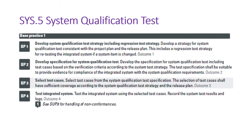BP1 talks about developing the system qualification test strategy, including the regression test strategy. Strategy is about how you are going to test and assemble it. We develop the strategy consistent with the project plan and release plan, because we may have promised the client or end customer a release — for example, by January 2021 we will release a particular car with infotainment technology. That commitment is called the release plan.